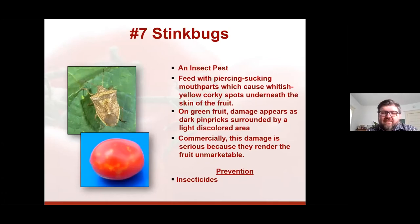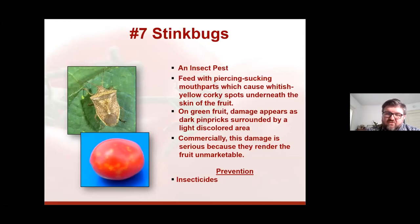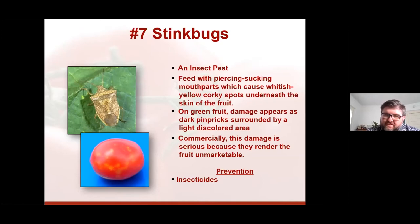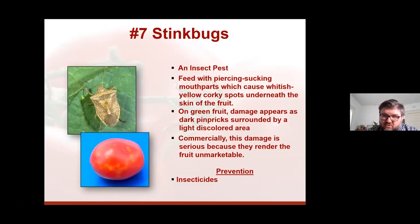Stink bugs — we're getting a lot here now. They have piercing, sucking mouthparts that they stick into the fruit, and you'll see this mottling on the fruit. It doesn't really affect edibility — you can still eat the fruit — but if you're farming and selling tomatoes, a lot of people don't like that. The damage can occur on green fruit and you don't see it until it ripens. It's really hard to control these. You could use an insecticide to reduce populations, but most work on contact. You could also use a floating row cover — since tomatoes are mostly wind pollinated, not insect pollinated, a row cover can reduce the damage.